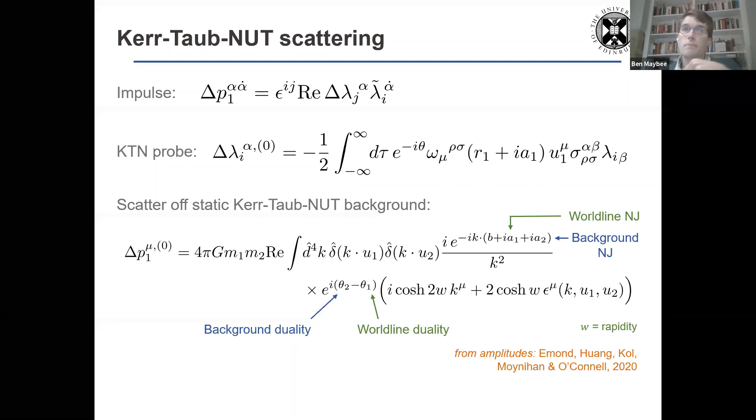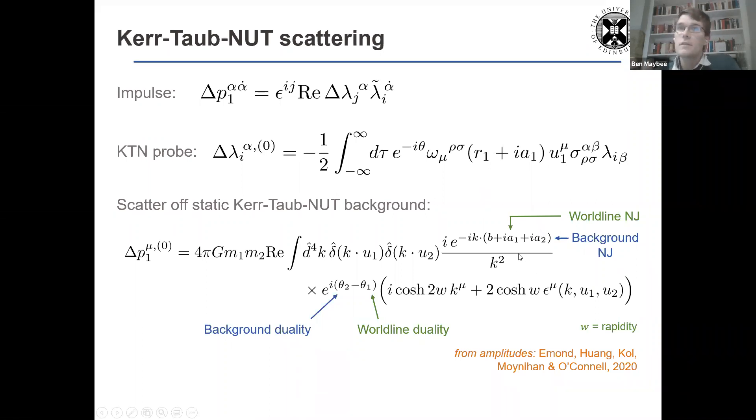We have independent Newman-Janis shifts in exponential for the background and the probe respectively, and then independent duality phase rotations. And the same kind of kinematic structure in terms of the rapidity as you would find for Schwarzschild if these didn't have the Newman-Janis shift or the phase rotations. So this result previously, to our knowledge, has only been found from using amplitudes. So this is where we have Kerr-Taub-NUT background and Kerr-Taub-NUT probe.